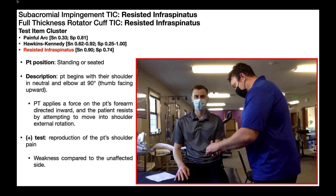We're now going to talk about the resisted infraspinatus test, also called the resisted external rotation test. In reality, this is just an external rotation manual muscle test for the shoulder, and it's part of two test item clusters: one for subacromial impingement syndrome and another for full thickness rotator cuff tear. The specificity isn't great at 0.74, but the sensitivity as a standalone test is 0.90, or 90%. Given this higher sensitivity, we can use this test as a screening tool to rule out these two shoulder pathologies — a negative result means a 90% chance the patient does not have subacromial impingement syndrome or a full thickness rotator cuff tear.